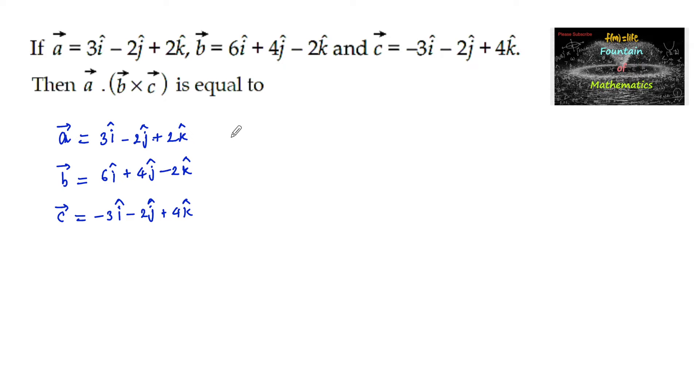Then a dot b cross c is equal to - so we need to find a dot of b cross c. We need to apply the dot product for vector a and vector b cross c. So let's first find b cross c.